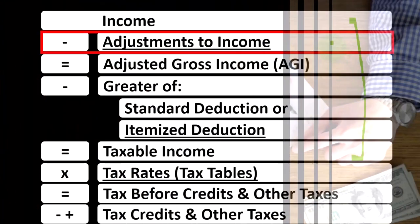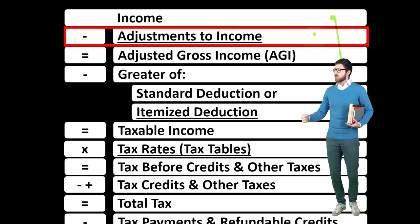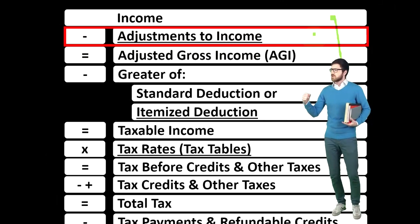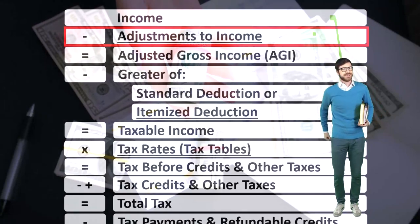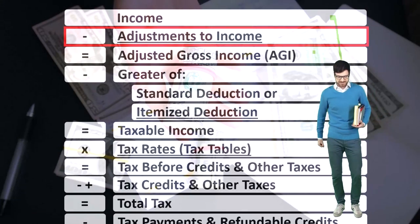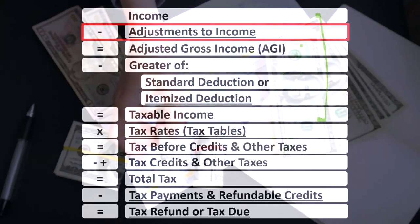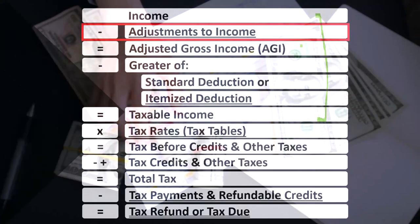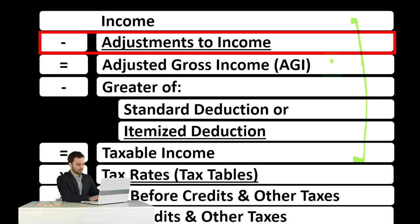When we think about the adjustments to income, this is in essence a deduction, but you can also think of it as a contra income account. For example, income minus the adjustments to income gets to the adjusted gross income, or AGI. The AGI is an important number because when we look at phase outs — deduction phase outs and credit phase outs due to income level — they're generally based on the AGI as opposed to the top-line income.